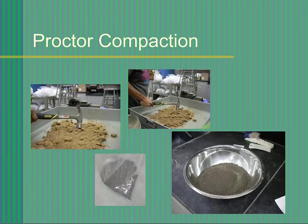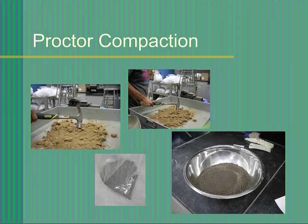Prepare the sample by spreading it out in one of the large trays and sun drying. Break down the clumps of soil with a mallet or other tool and pass the sample through the number 4 sieve. Discard any gravel. You will need 5 pounds of soil for each compaction test. According to the ASTM standard, you may not reuse soil that has been previously compacted. Therefore, you will need approximately 25 pounds of soil for the compaction test.